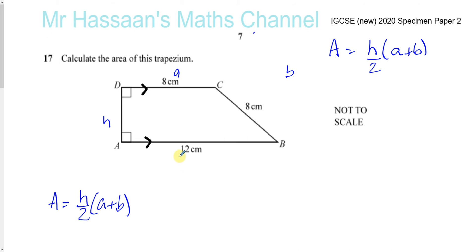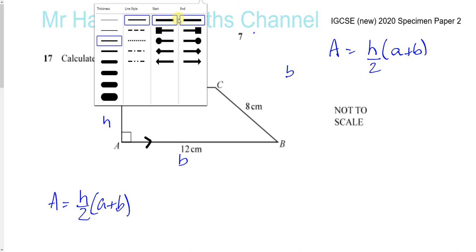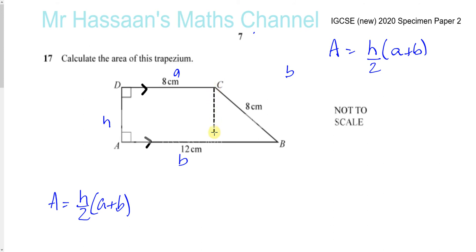Now, in this particular question, the problem is we don't have the height of the trapezium—we don't have the distance between the parallel sides, which is equivalent to this here. Because these are parallel sides, this is the same length as that. This is also h; this can be considered h, the distance between the parallel sides.